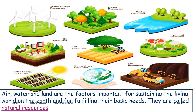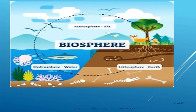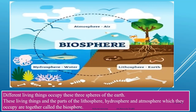Air, water, and land are important factors for sustaining life on planet earth and help to fulfill our basic needs — food, water, plants, and animals. All these things are present on our planet naturally. You have to be very careful while using these resources because they are naturally present but some of them can get extinct. Different living things occupy these three spheres of the earth, and the part of lithosphere, hydrosphere, and atmosphere which living things occupy together is called the biosphere.